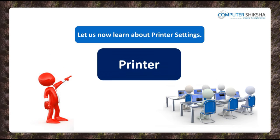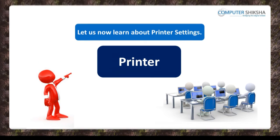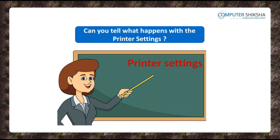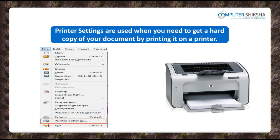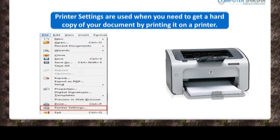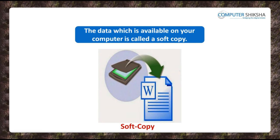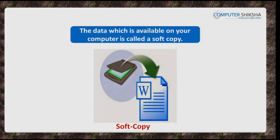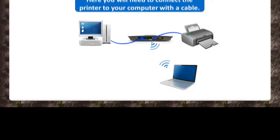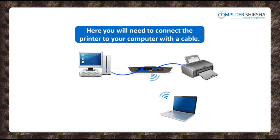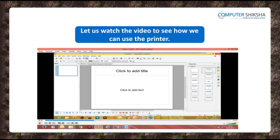Let us now learn about Printer Settings. Printer Settings are used when you need to get a hard copy of your document by printing it on a printer. The data available on your computer is called a soft copy. You can use the printer in many ways on different computers — you will need to connect the printer to your computer with a cable.